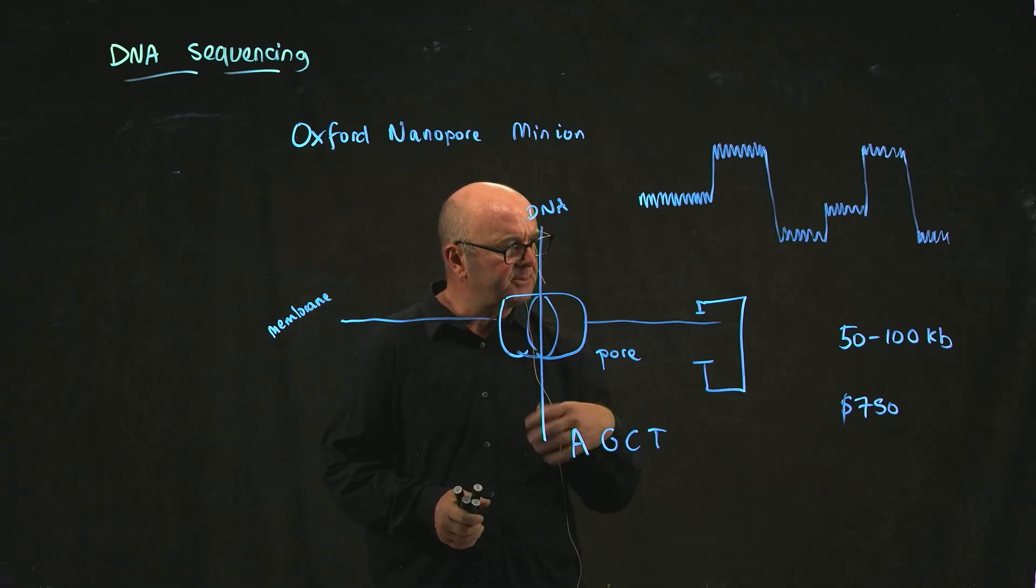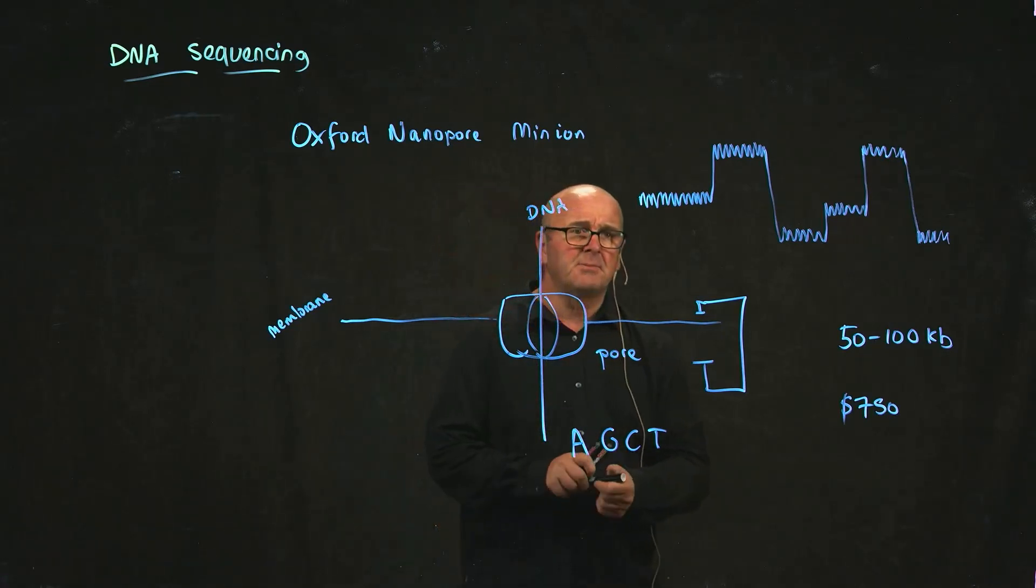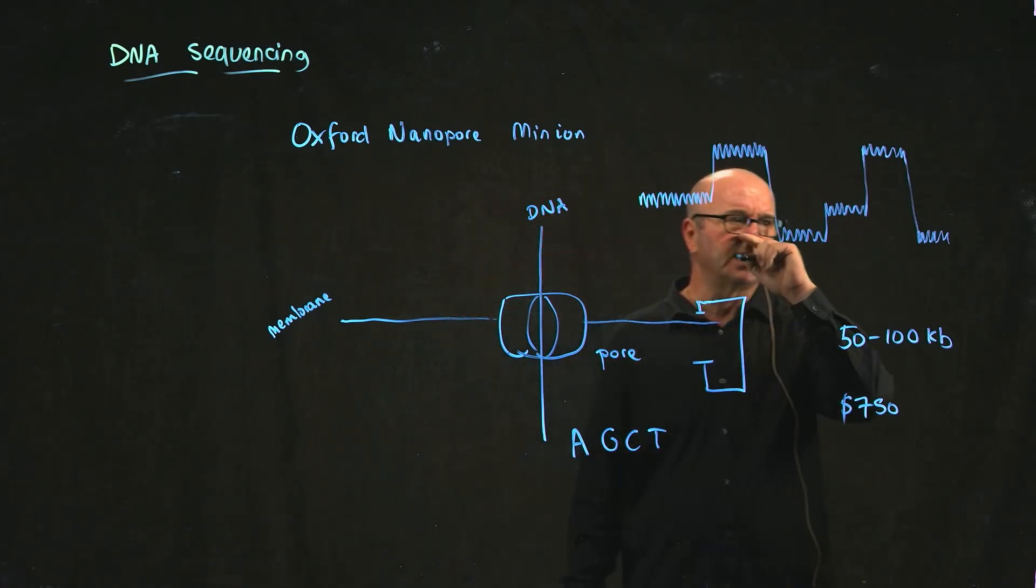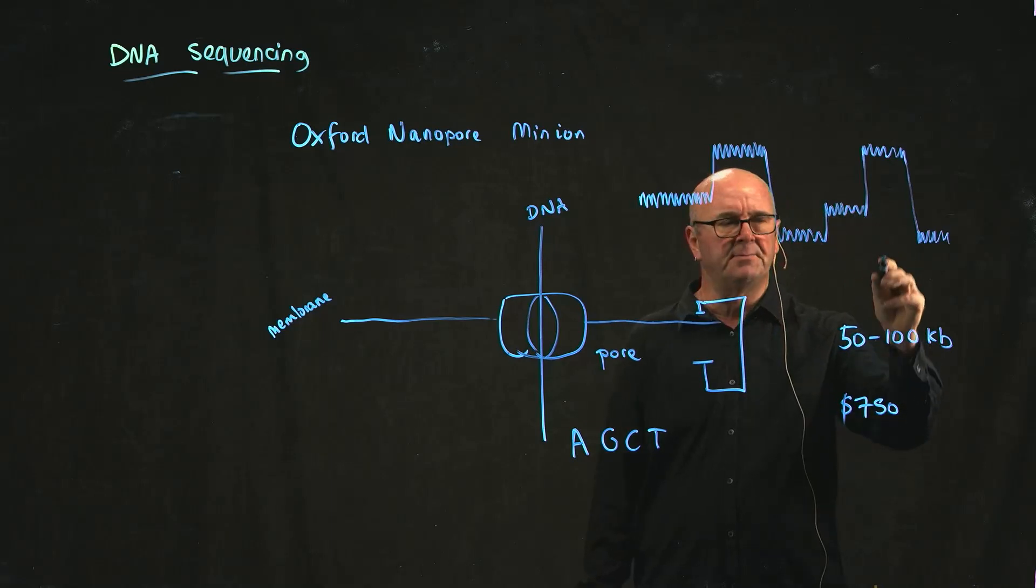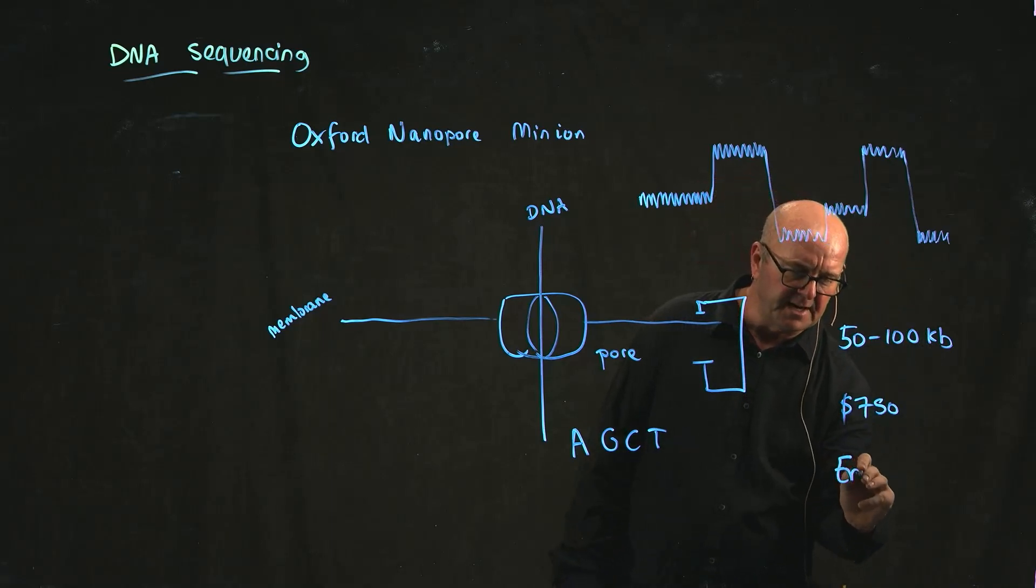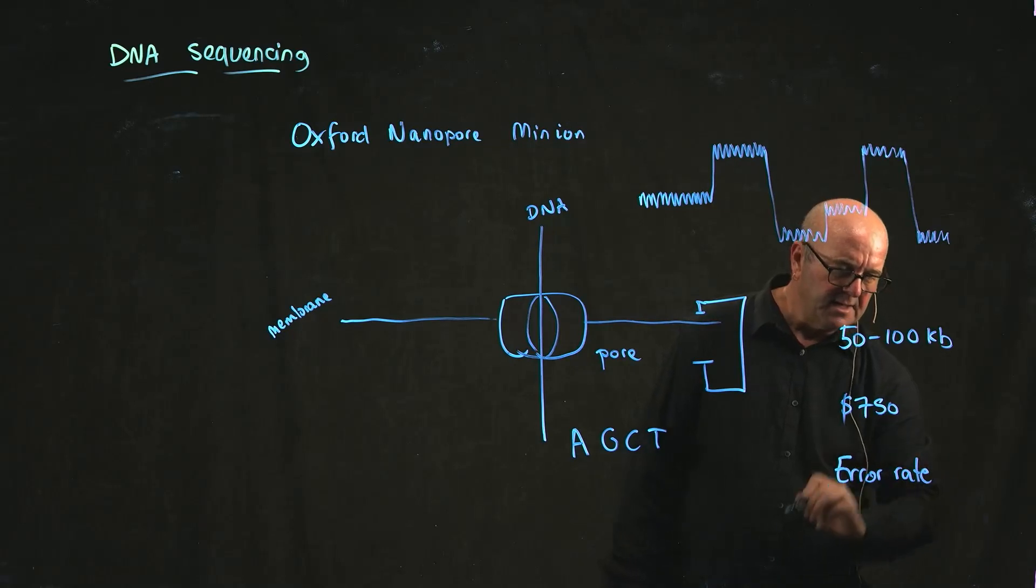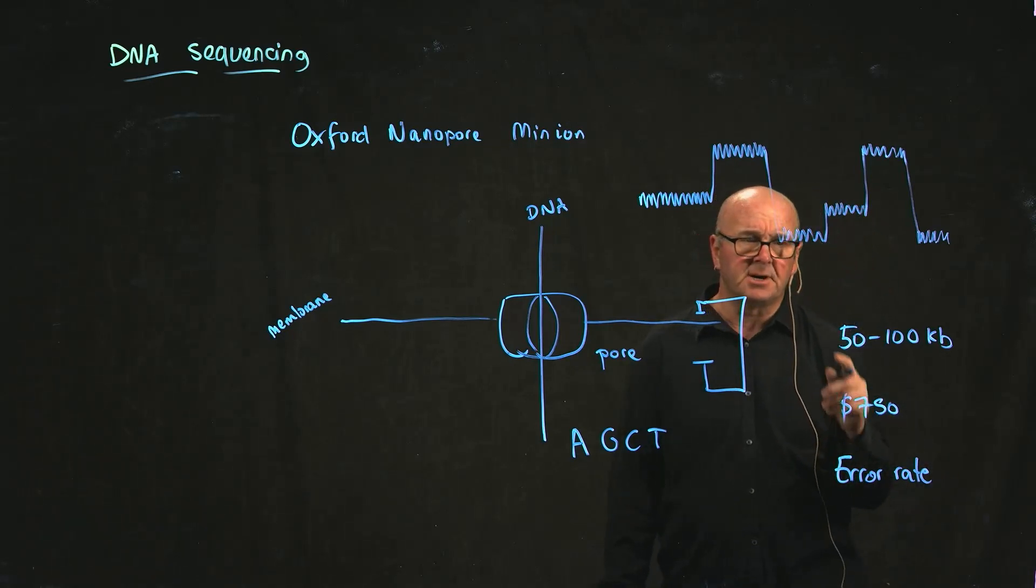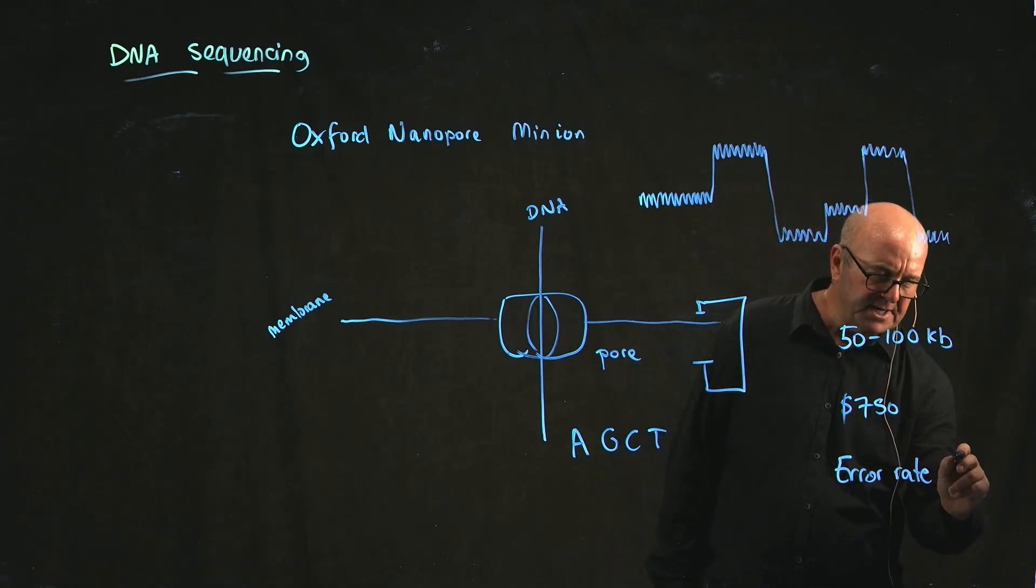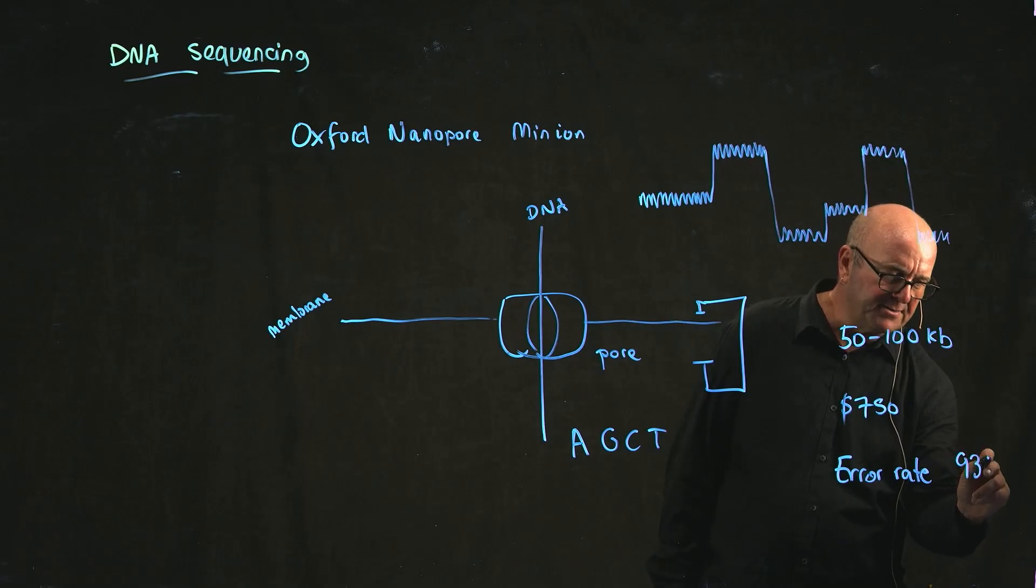The problem with nanopore sequencing, because you're analyzing this waveform, is that it has a relatively high error rate. In the sequencing I did over the summer, individual reads had about 93% accuracy, so about a 7% error rate.